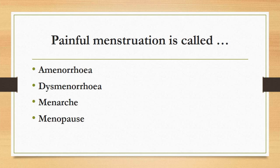Painful menstruation is called: amenorrhea, dysmenorrhea, menarche, or menopause? The correct answer is dysmenorrhea. Dysmenorrhea means painful menstruation. Amenorrhea means absence of menstruation. Menarche is the beginning of menstruation. Menopause is the permanent stopping of menstruation.